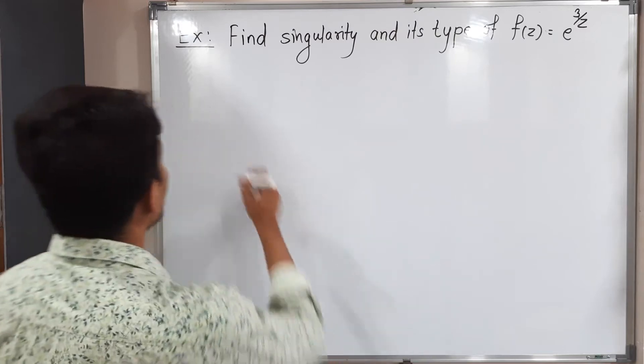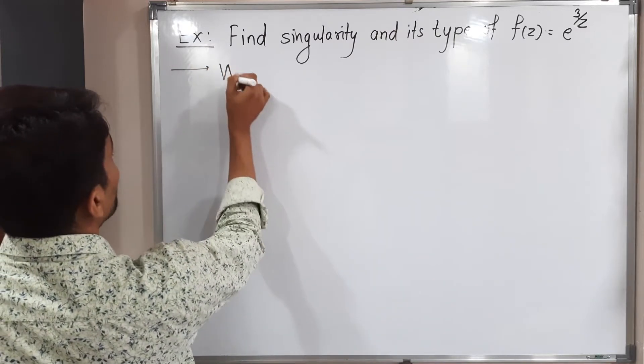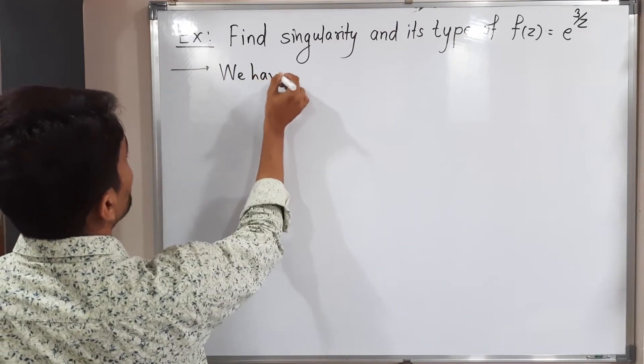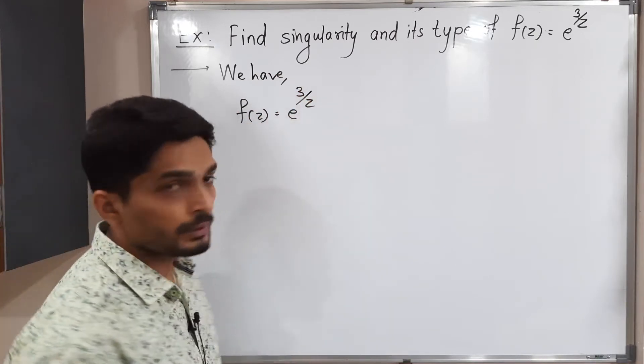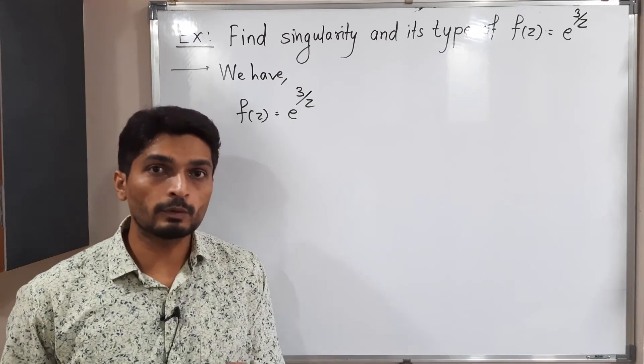Let us write the given function first. We have f(z) = e^(3/z). You can easily see if I put z = 0, since z is in the denominator in the power of e.